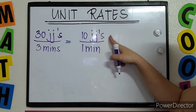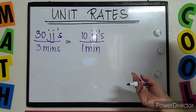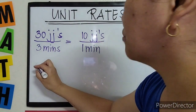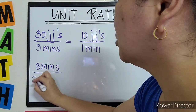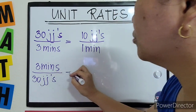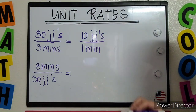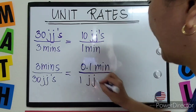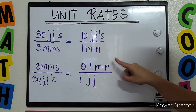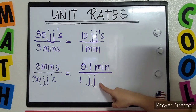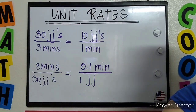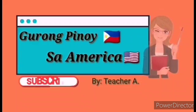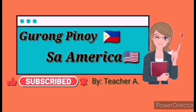For the second unit rate, we switch the ratio — it becomes how many minutes for 1 jumping jack. So we have 3 minutes over 30 jumping jacks. 3 divided by 30 gives us 0.1. So the second unit rate is 0.1 minute per 1 jumping jack. That's it — thank you!